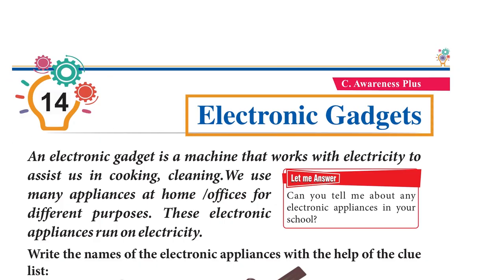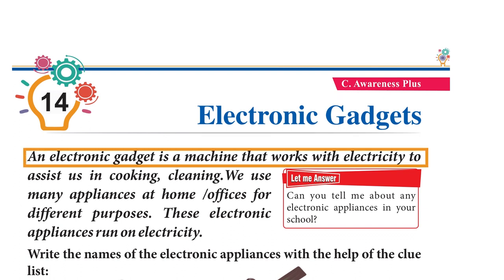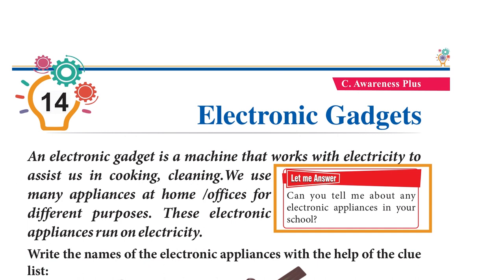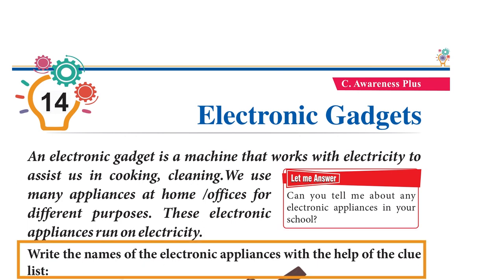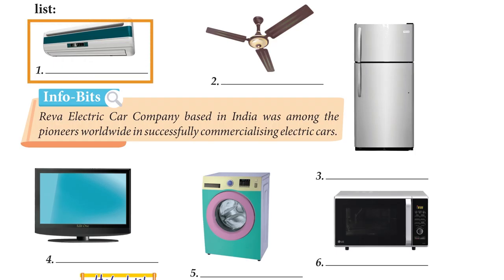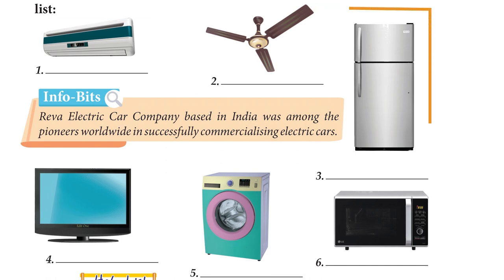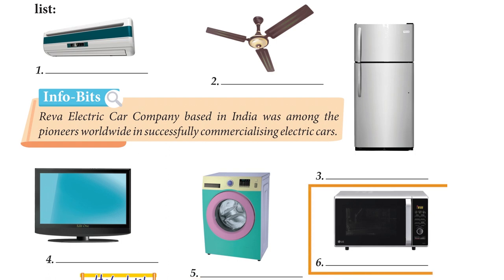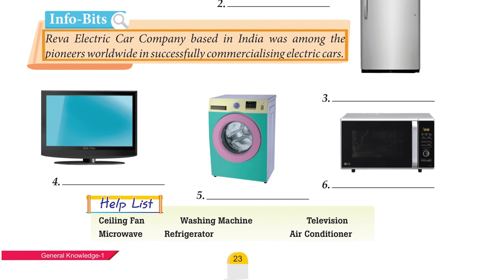Chapter 14: Electronic Gadgets. An electronic gadget is a machine that works with electricity to assist us in cooking and cleaning. We use many appliances at home and offices for different purposes — these electronic appliances run on electricity. Write the names of the electronic appliances using the clue list: Air conditioner, Ceiling fan, Refrigerator, Television, Washing machine, Microwave. Info Bits: Reva Electric Car Company, based in India, was among the pioneers worldwide in successfully commercializing electric cars.